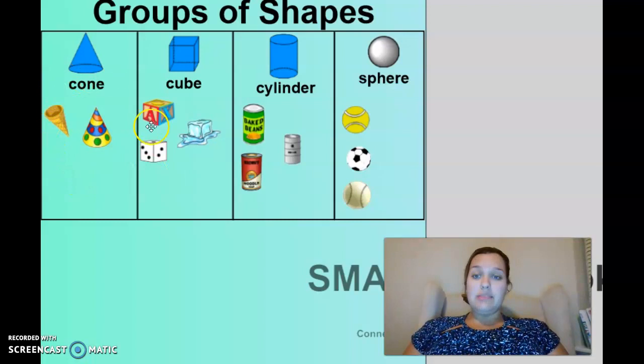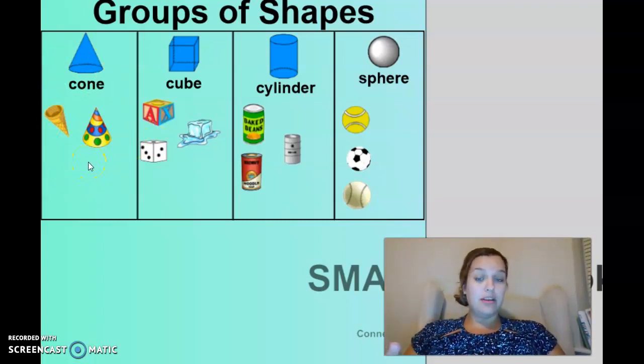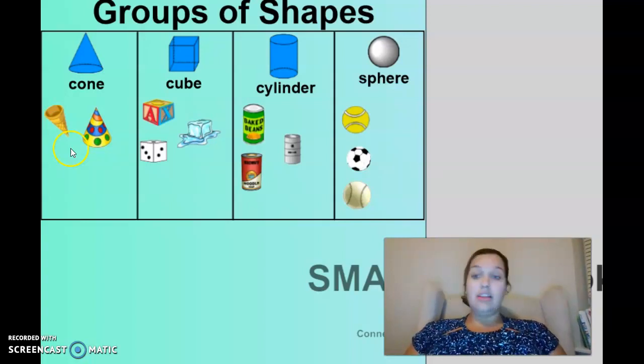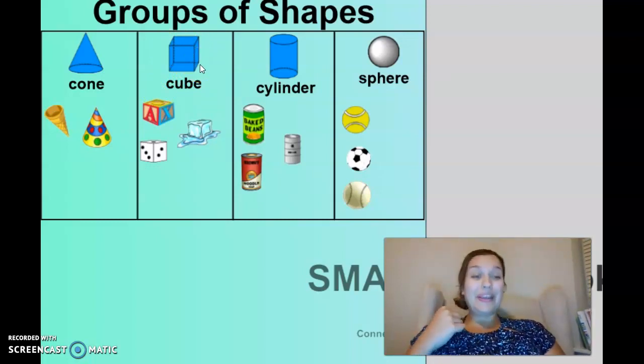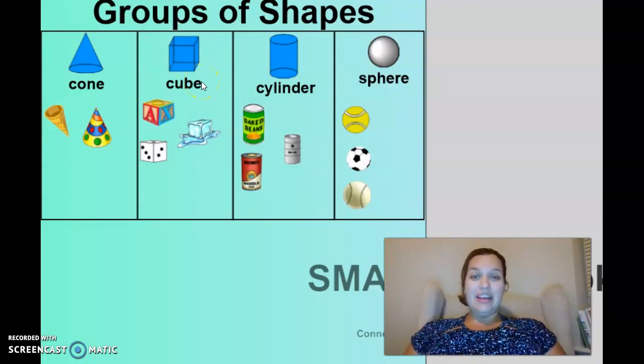Now, you can look at these pictures and you can see some things that maybe you have around your house or that are outside that look like a cone. Now remember, a cone has a circular base and a point at the top. Or a cube, which has the six faces that are all... Are they rectangles or squares? They are squares. Very good. So it's six squares and that makes a cube.